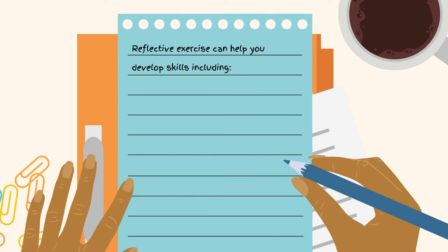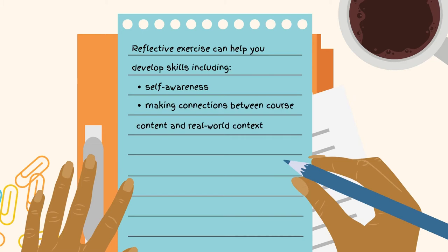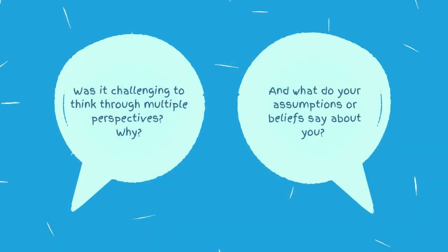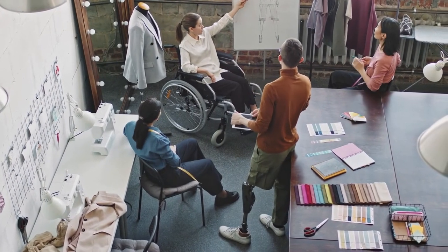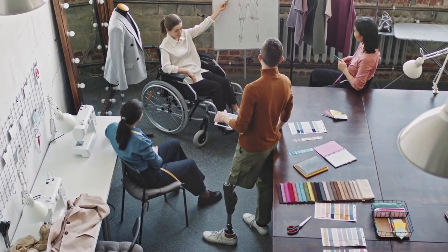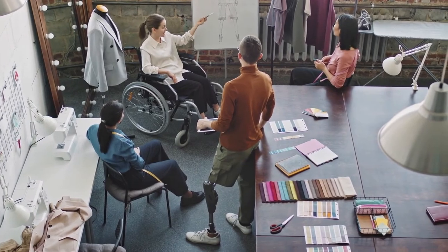In class, your instructor may ask you to reflect on a real-world example, consider the experience from multiple perspectives, and provide a written reflection. They may ask you to think about your own assumptions and beliefs. This reflective exercise can help you develop many other skills too, including self-awareness, making connections between course content and the real world, analysis, communication, and critical thinking. But it also offers an opportunity to examine yourself — was it challenging to think through multiple perspectives, and why? What do your assumptions or beliefs say about you? Your instructor may also ask you questions to help you think about your own learning and how you are doing in the course through short surveys and other written responses.